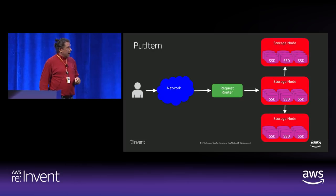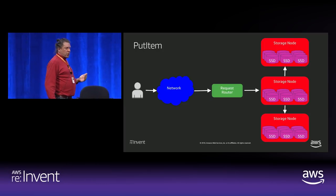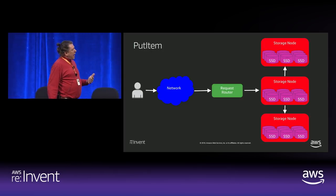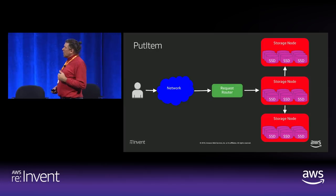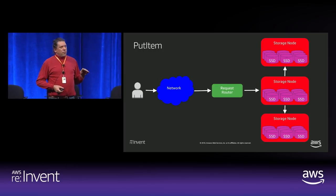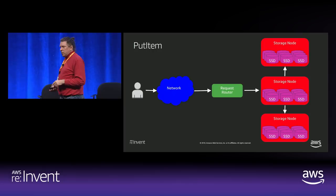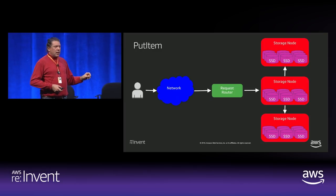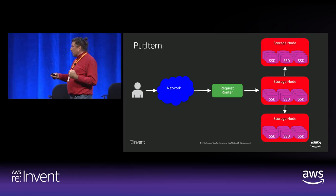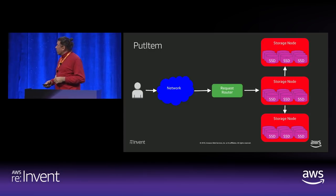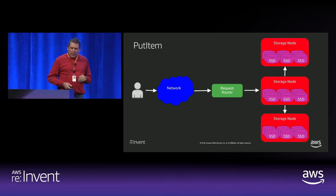A put is a little more complicated. The request router talks to a storage node and tells it to put the data. The storage node stores it locally, but because we need to durably store your data, putting it on one server puts the data at risk. So Dynamo writes it and tells two other storage nodes to store that data. In reality, Dynamo waits for one other node to acknowledge to reduce latency. The third node is usually close behind, but once we get it to two nodes, the storage node acknowledges to the request router and sends back the result for the put.